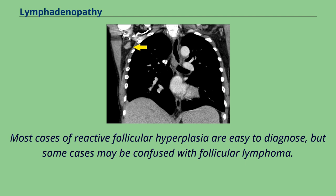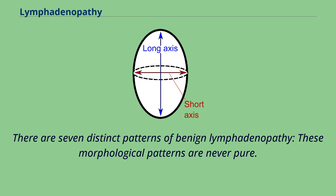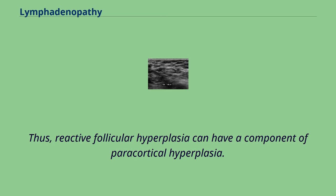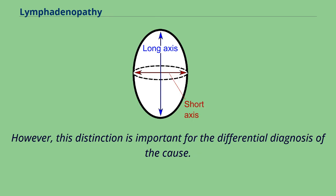Most cases of reactive follicular hyperplasia are easy to diagnose, but some cases may be confused with follicular lymphoma. There are seven distinct patterns of benign lymphadenopathy. These morphological patterns are never pure; thus, reactive follicular hyperplasia can have a component of paracortical hyperplasia. However, this distinction is important for the differential diagnosis of the cause.